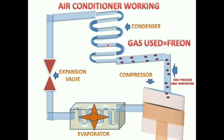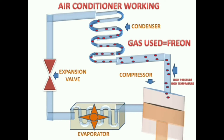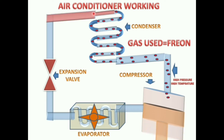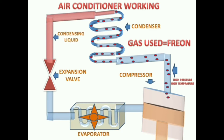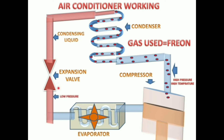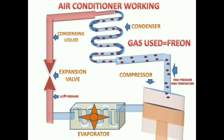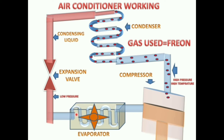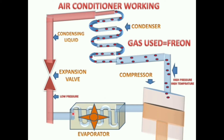At the condenser, the high pressure and high temperature gas vapors will change their phase into liquid form at the same temperature. This condensed liquid will go to the expansion valve, which will lower the pressure of the liquid, and in this lower pressure cooled state it will go to the space where we want to produce cooling.